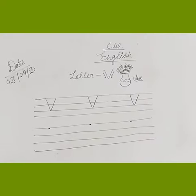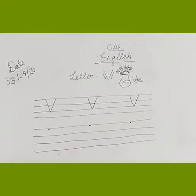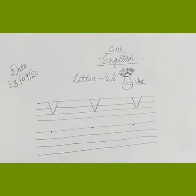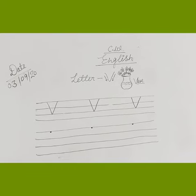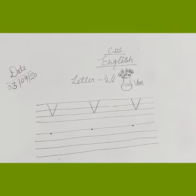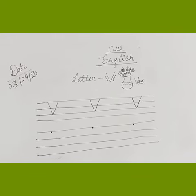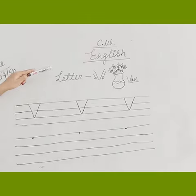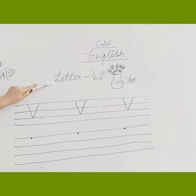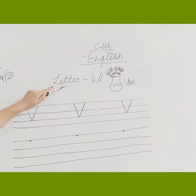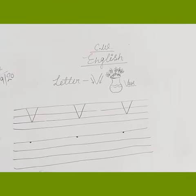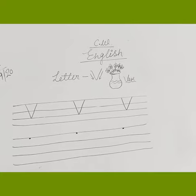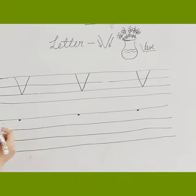Now it's time for our English session. So kids, in English session today we will do letter V with a dot. So let's start with the date, 3-9-20. Then you will write classwork, heading letter V, V for V.